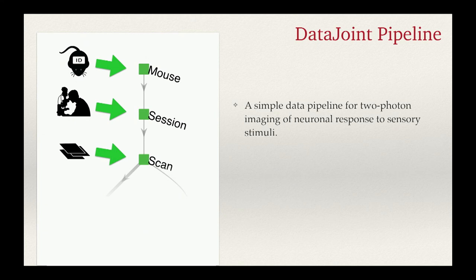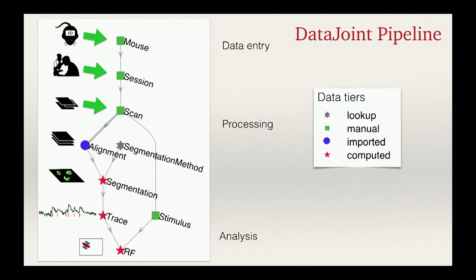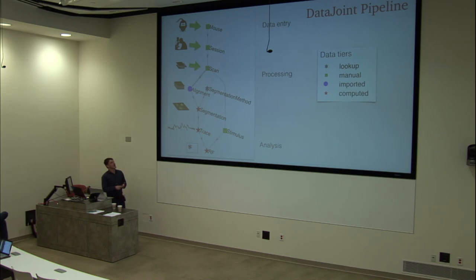A DataJoint pipeline looks like a graph of nodes — each node contains data and optionally computation. When you design your experiment or data pipeline, you define these nodes. The initial nodes are for entering data during the experiment, much like a lab book, and they are really tables that look like spreadsheets you can fill out. Subsequent nodes contain computations. For example, in a two-photon experiment, the pipeline starts with mouse information, session, and scan, and then computation takes over: motion correction, segmentation of images, extraction of calcium traces, and computation of receptive fields.